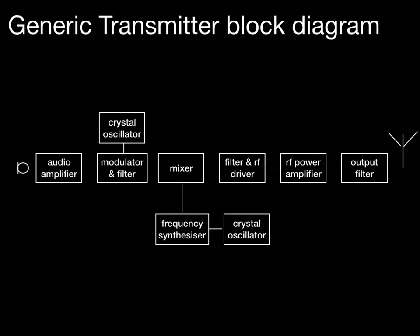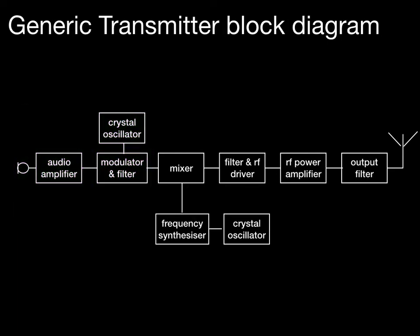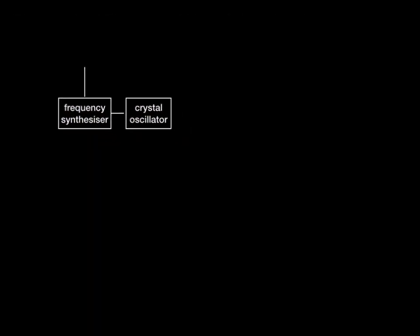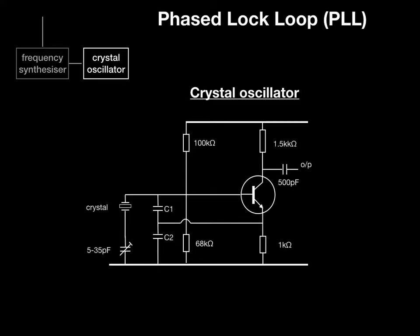Here's our generic block diagram again, showing the three blocks we've covered so far. Now we're going to have a closer look at the crystal oscillator and frequency synthesizer. We should recognise the transistor oscillator as a common emitter. The emitter is common both to the input circuit — the crystal oscillatory circuit on the left — and the output. You should recognise the bias transistors, and from their values you can guess this transistor is biased into class A operation.